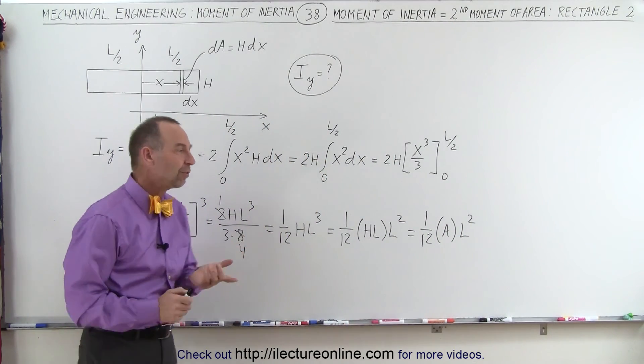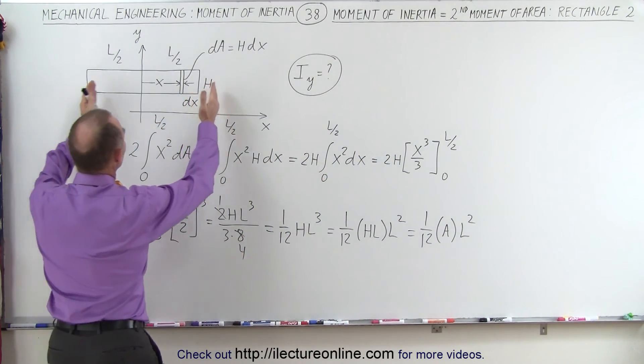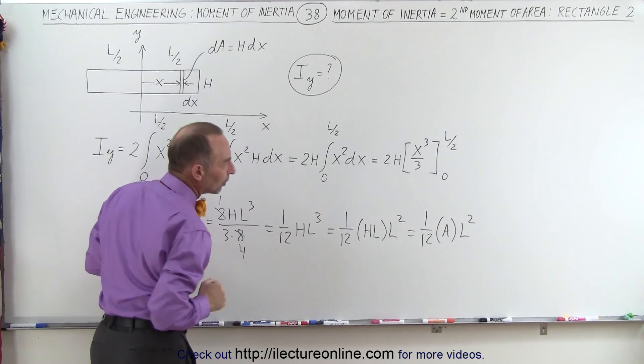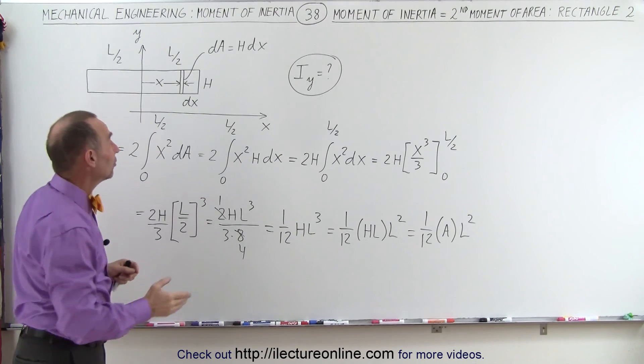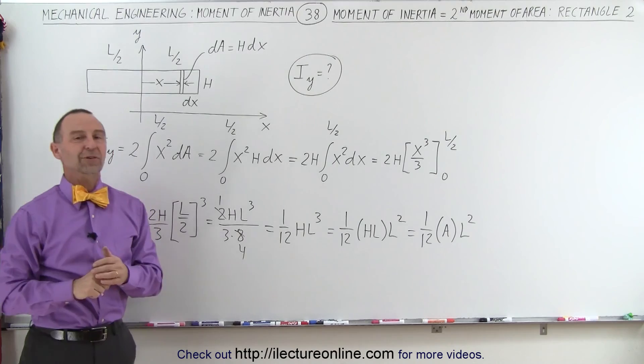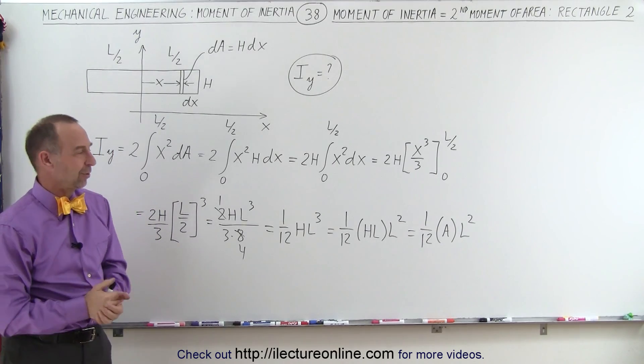Now remember what we did in the previous video, when we put the object at the very end, then we realized the moment of inertia is 1/3rd AL squared, but in this case, with the center mass at the y-axis, the moment of inertia is 1/12th AL squared. And that's how it's done.